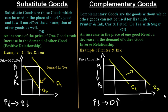Substitute goods are those goods which can be used in place of specific goods and it will not affect the consumption of other goods as well. For example, coffee and tea are substitute goods.